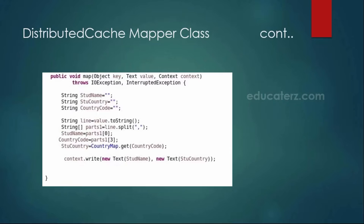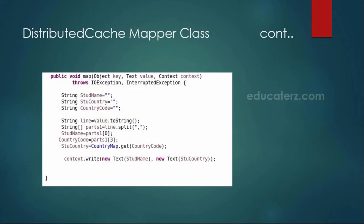In the map method, I am reading the client details file. Since the input is comma-separated, I split it by comma and read the client name and the country code, which is the last value at index 3. To get the full country name, I use countryMap.get, which retrieves the value from the hash map — for example, US returns United States. Finally, to emit the records, I use context.write with the student name and the full country details. This is how we combine these two data sets — the client details and the cache country details — using the distributed cache and hash maps.